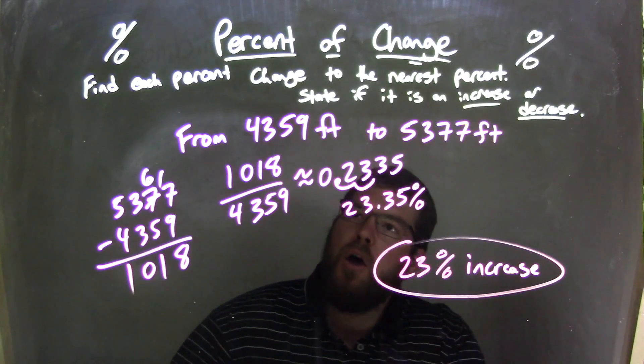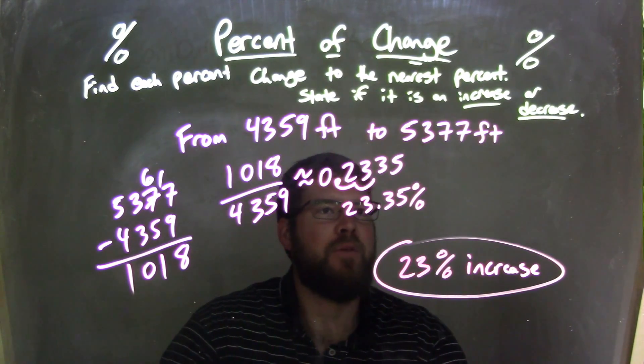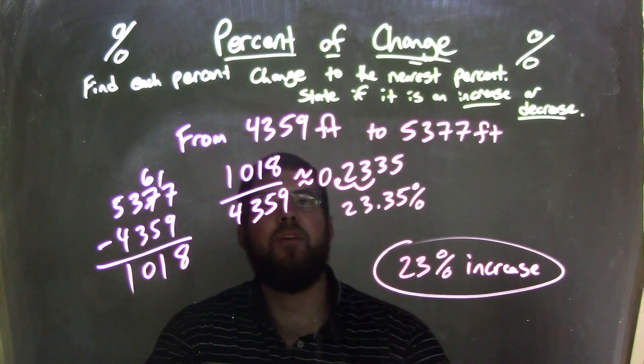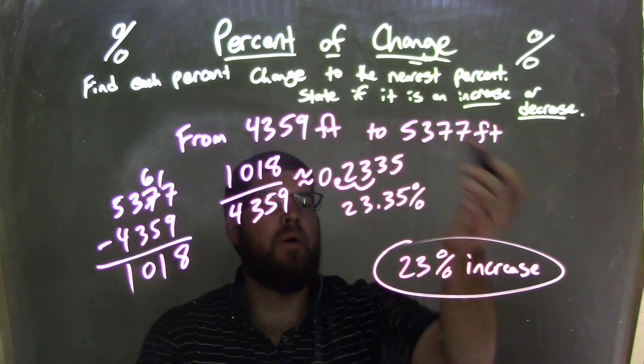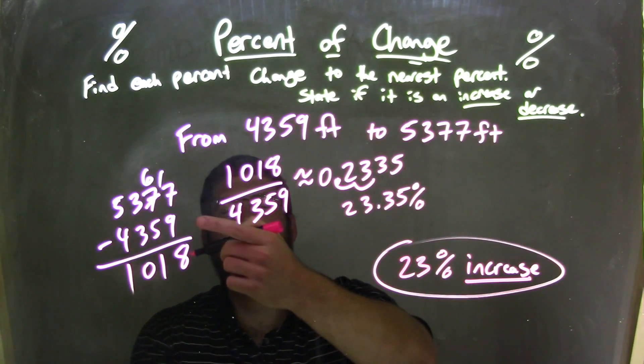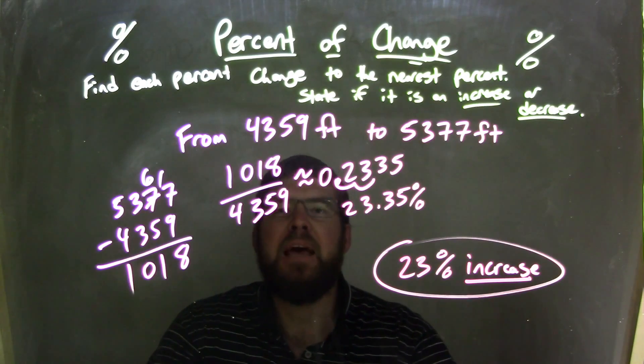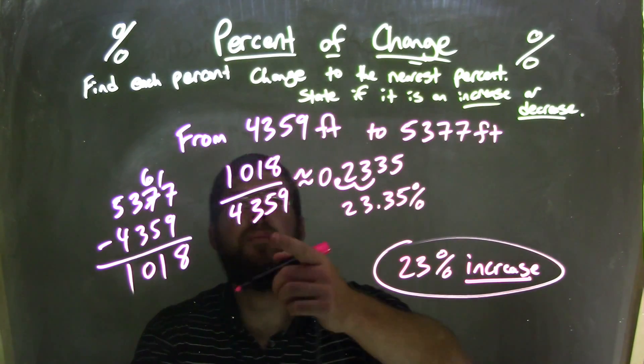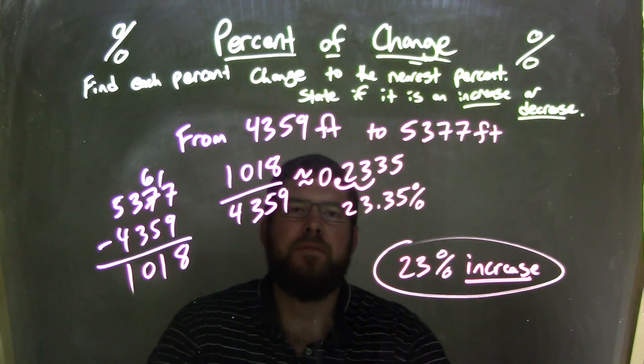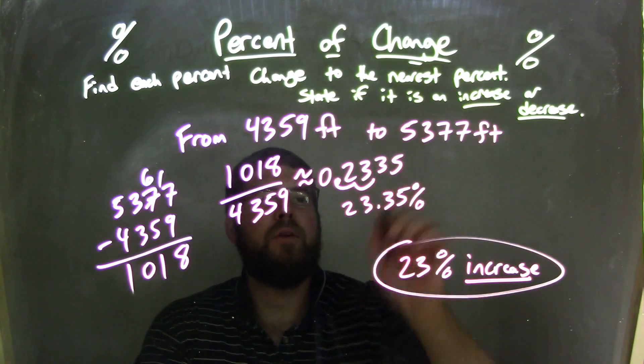So let's recap here. We start with from 4,359 feet to 5,377 feet, and I first saw that that was an increase while we're going up, so I wrote it down right here first. I then found the difference between the two numbers, which are the large number subtracted by the smaller number, to get 1,018. I take that 1,018 and divide it by our first number, 4,359.